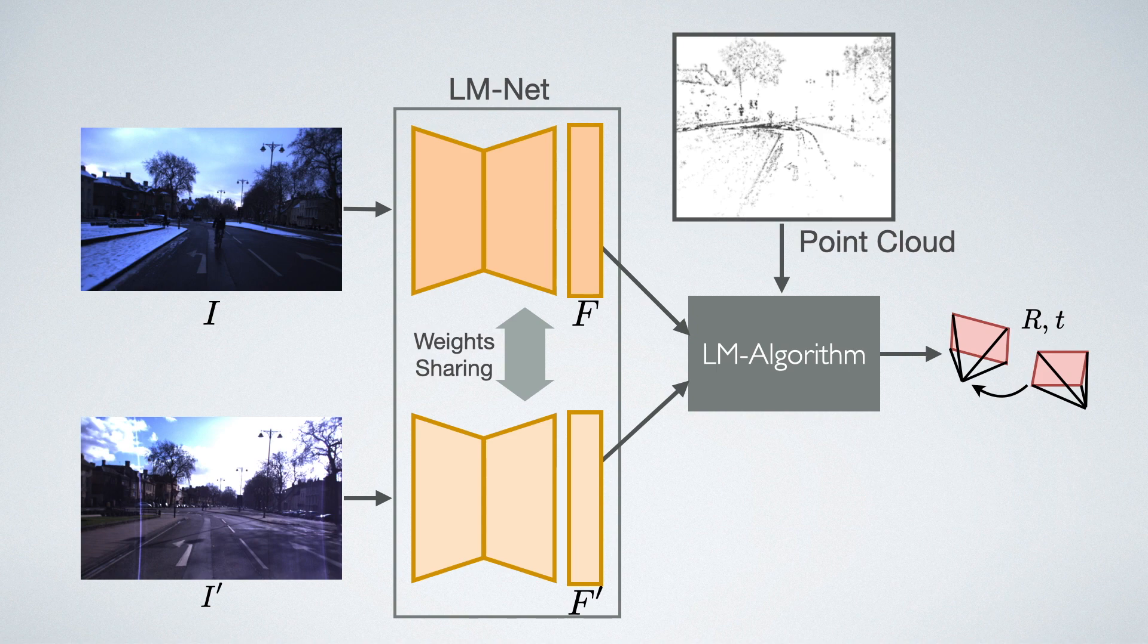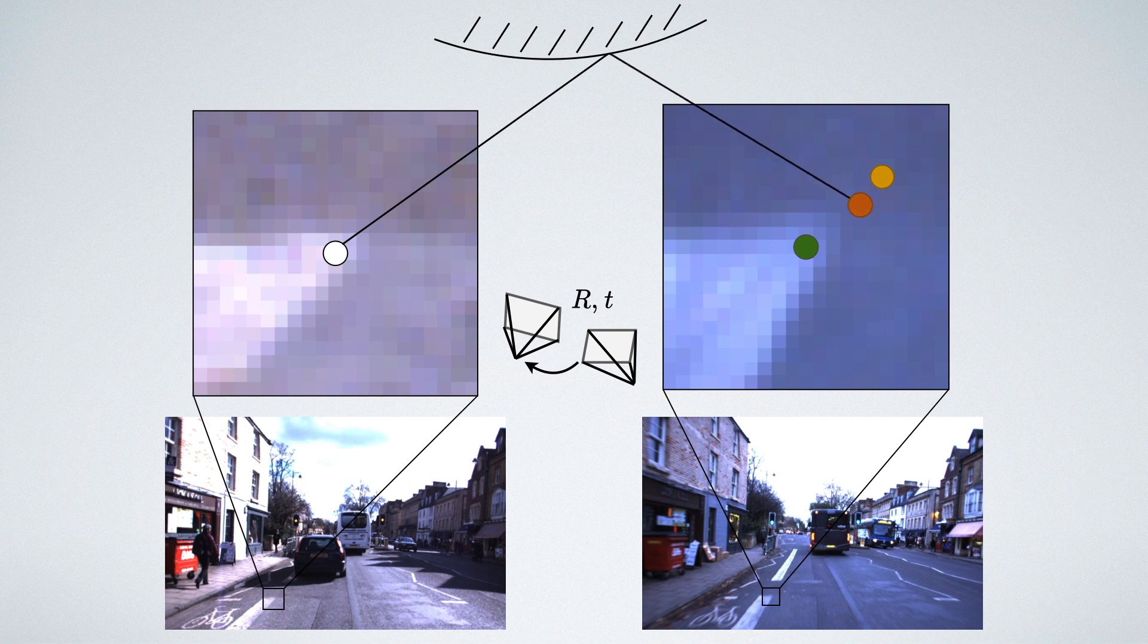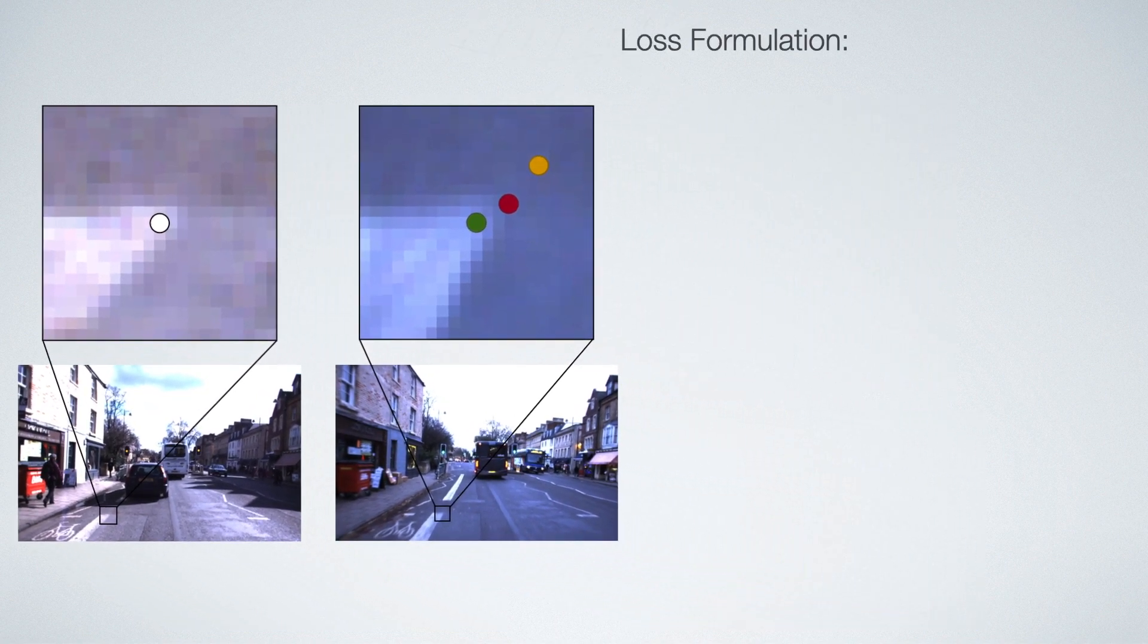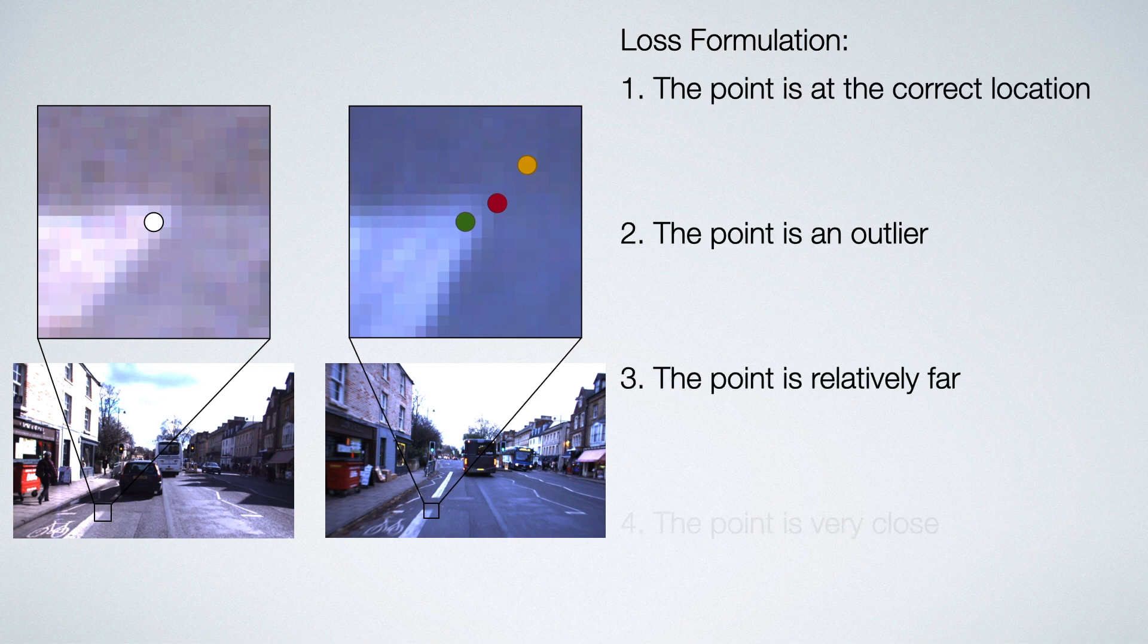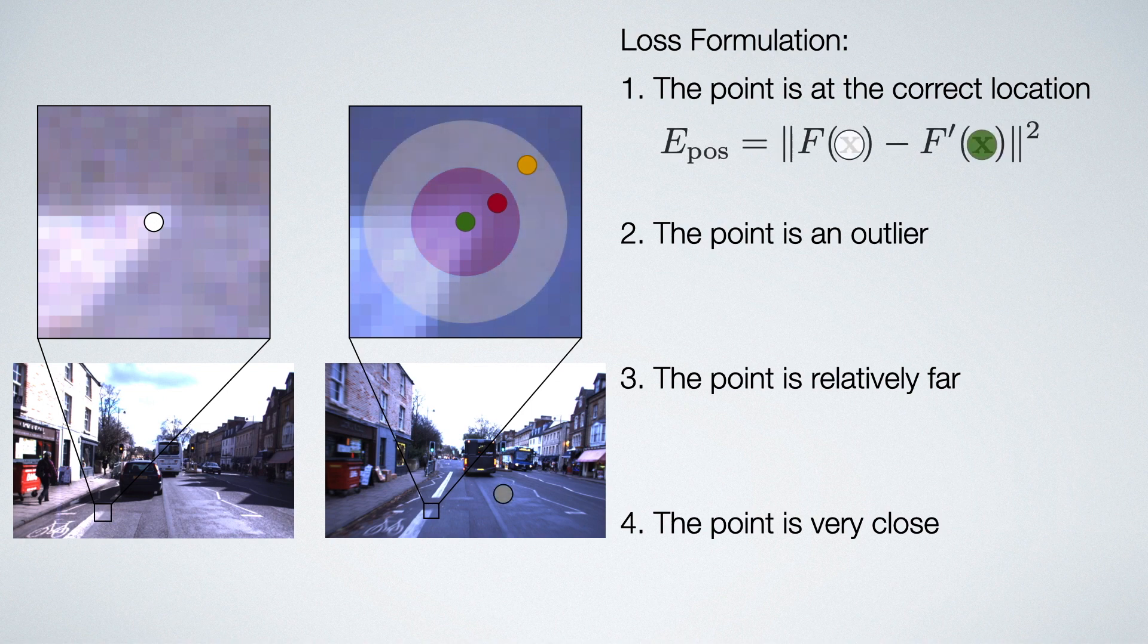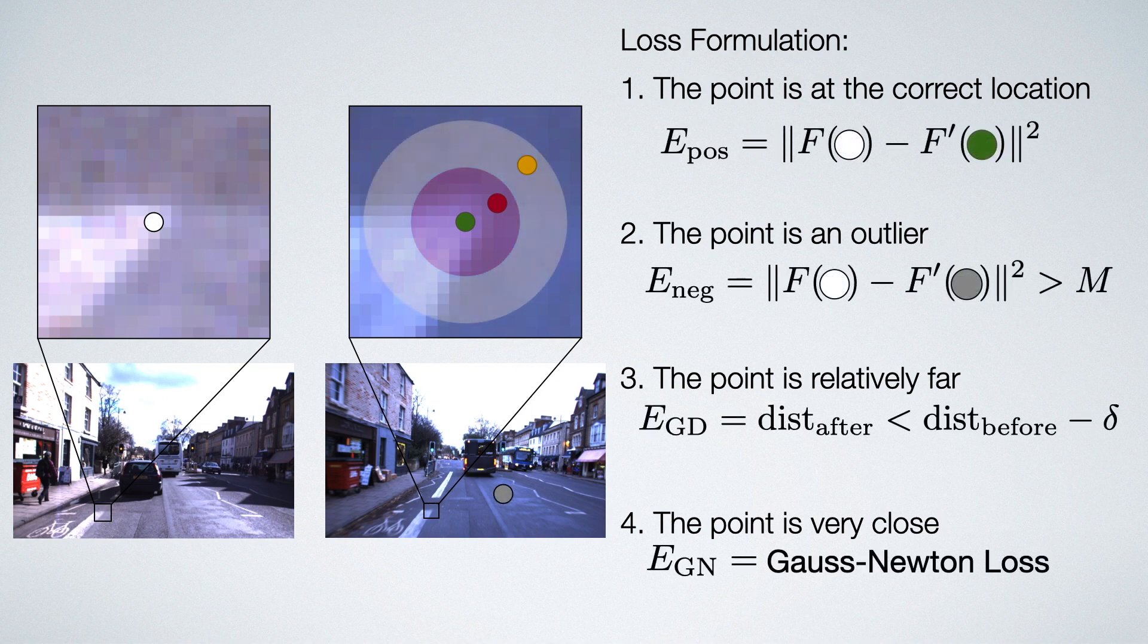To achieve this, we propose a novel loss formulation, which is inspired by the typical behavior of the Levenberg-Marquardt algorithm. We consider four different cases which can happen during the optimization and propose a point sampling strategy and a loss term for each.